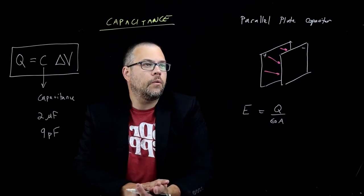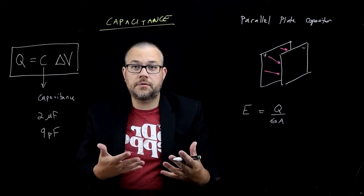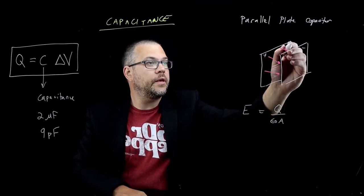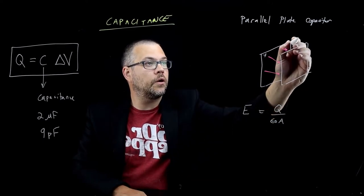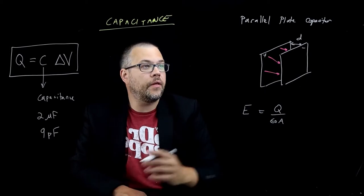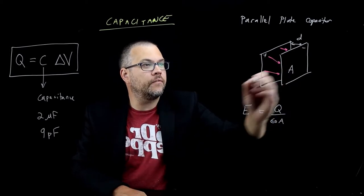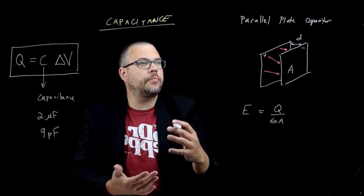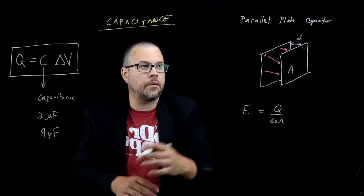What does that mean? Well, there are really two different parameters when it comes to the geometry of the capacitor. One of them is the distance between the plates, I'm going to call that D. And then the other is the actual area of the plates, I'm going to call that A. And in a parallel plate capacitor, A is the same on both plates.